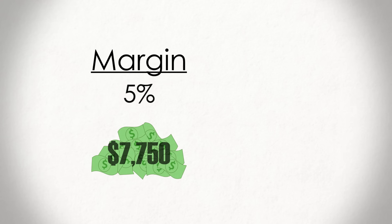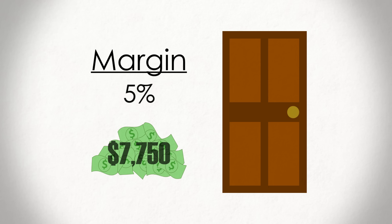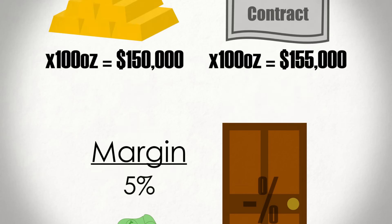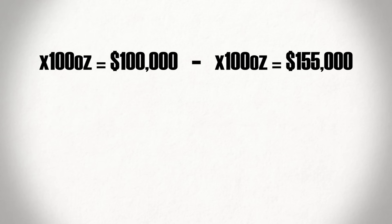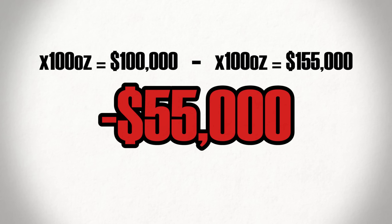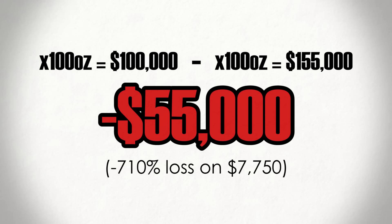You may, for example, only need to have 5% of the $155,000 contract, or $7,750, in the account. This may seem convenient, but it opens the door to pretty substantial losses. If gold prices fell to, say, $1,000 an ounce, you would lose $55,000 — a 710% loss on your initial deposit. Needless to say, futures are not for the inexperienced investor.